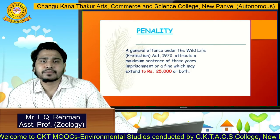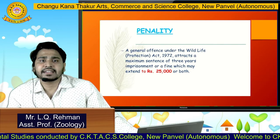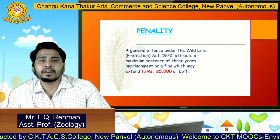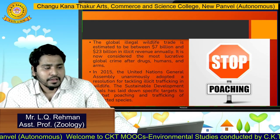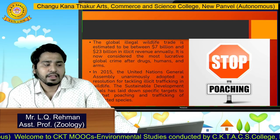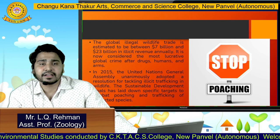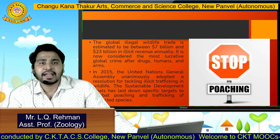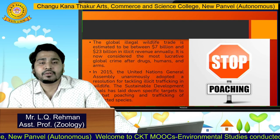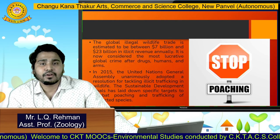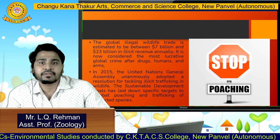Now, what is the penalty for poaching? A general offense under the Wildlife Protection Act of 1972 attracts a maximum sentence of 3 years imprisonment, or a fine which may extend up to 25,000 rupees, or both. The global illegal wildlife trade is estimated between 7 billion and 23 billion dollars. In 2015, the United Nations adopted a resolution for tackling the trafficking of the wildlife market.